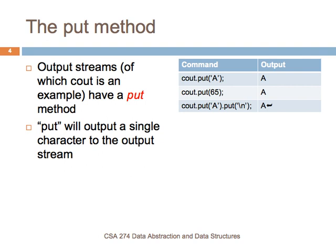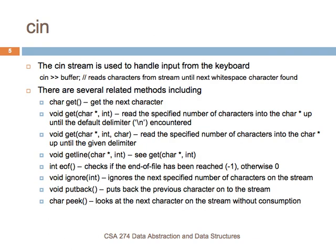The Cin stream is used to handle input from the keyboard. There are several methods in addition to just using Cin that are available. When you use these methods, you shouldn't use the double arrow notation, but rather you would do Cin.get to get the next character, or Cin.get with a character argument to read a certain number of characters into a character array. There are other operations including getline, which gets an entire line. You can do Cin.endoffile to see whether you've reached the end of file. You can ignore whatever's been inputted and put things back to the stream. We'll get some experience using some of these in the examples and exercises in class.